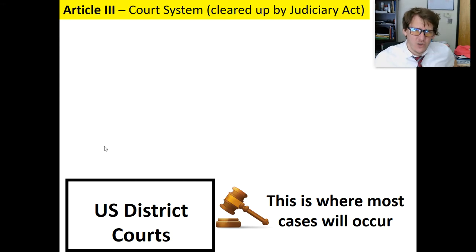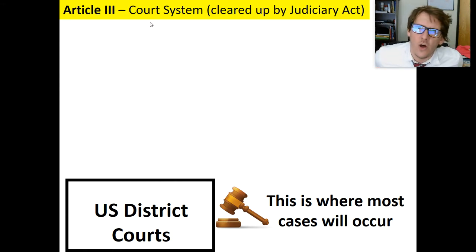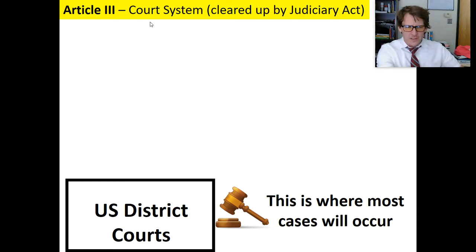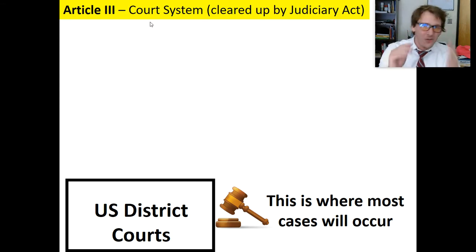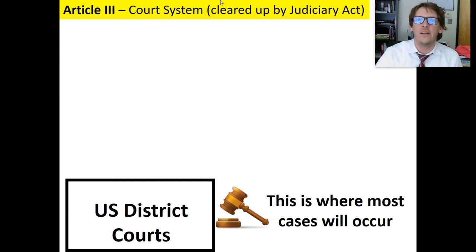Article 3 of the Constitution basically explains our court system, and it would later be cleared up by the Judiciary Act, one of the earliest laws in our country. Because Article 3 doesn't go into enough detail — they spent all this time in Article 1 and Article 2, and then for Article 3 it's like, we're going to have a couple of courts, let's move on. So eventually they cleared it up in the Judiciary Act.